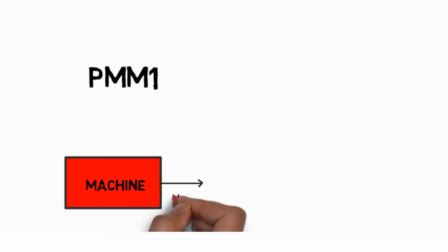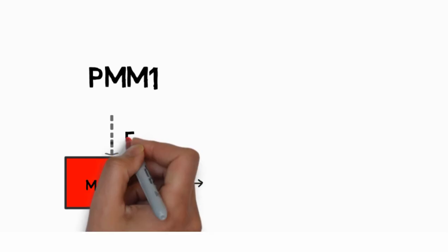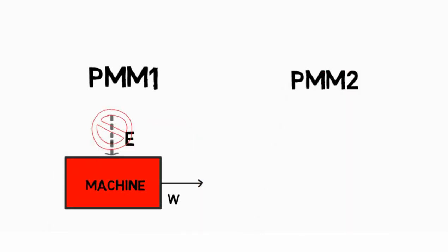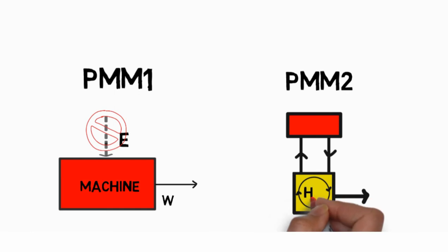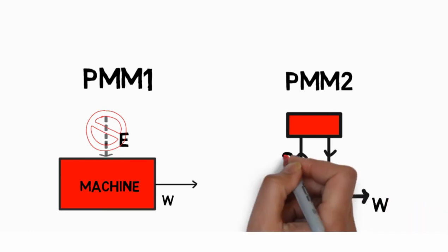A PMM-1 is a machine which would continuously supply mechanical work without consuming some form of energy. And a PMM-2 is a heat engine that will produce network in a complete cycle by exchanging heat with only one reservoir.